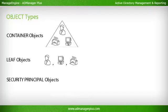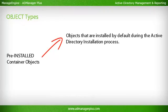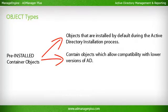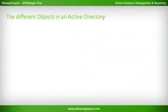Security Principal Objects are objects that can be authenticated using a username and password, and can also be assigned permissions and authorizations. Pre-Installed Container Objects are objects that are installed by default during the Active Directory installation process. They contain objects which allow compatibility with lower versions of AD and are also used to give certain functionalities to the objects contained within the different objects in an Active Directory.